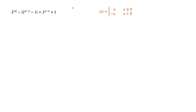By definition, the absolute value of z equals z itself if z is greater than or equal to zero, or equals minus z when z is negative. For example, the absolute value of 2 equals 2, since 2 is positive. But the absolute value of minus 2 equals minus of minus 2, and since minus times minus gives plus, we get 2 as expected.